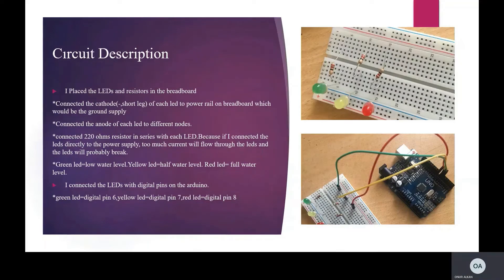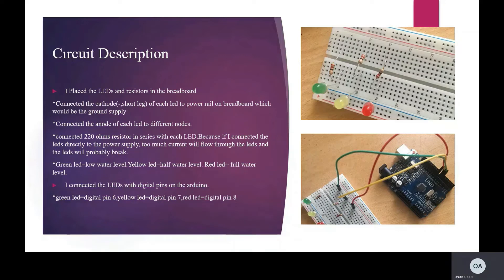Now I will describe the project circuit step by step. First, I placed the LEDs and resistors in the breadboard. I connected the cathode of each LED to the power rail on the breadboard, which is the ground supply. I connected the anode of each LED to different nodes. I connected 220-ohm resistors in series with each LED, because if I connected the LEDs directly to the power supply, too much current would flow through the LEDs and they would probably break. Green LED indicates low water level, yellow LED indicates half water level, red LED indicates full water level.